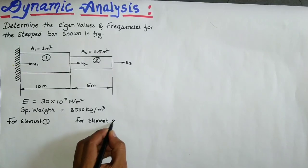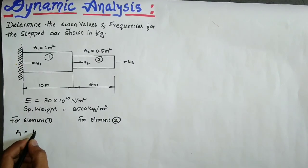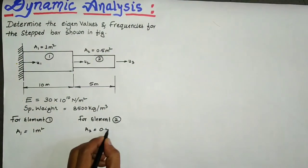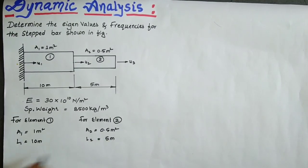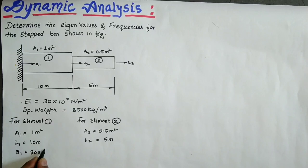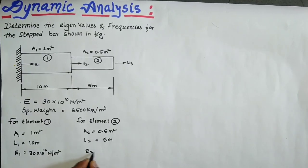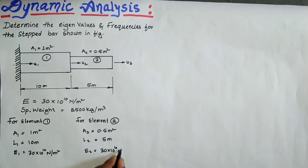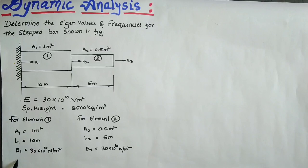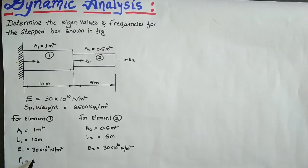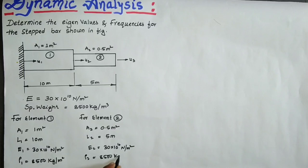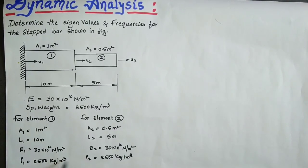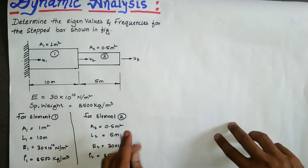Writing all given values: A1 = 1 m², A2 = 0.5 m², L1 = 10 m, L2 = 5 m. E1 = 30×10^10 N/m² and E2 = 30×10^10 N/m². Density ρ1 = 8500 kg/m³ and ρ2 = 8500 kg/m³. These are the given values for both elements.